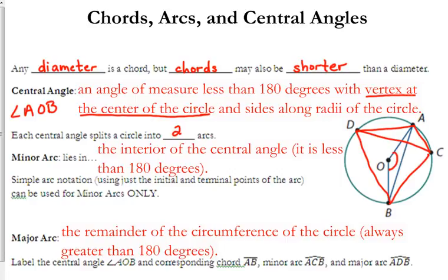And so, sometimes we use what we call simple arc notation, which just uses the initial and terminal points to name a minor arc. But that's only for minor arcs. And then, the major arc would be considered the remainder of the circumference of the circle. It's always going to be greater than 180 degrees.